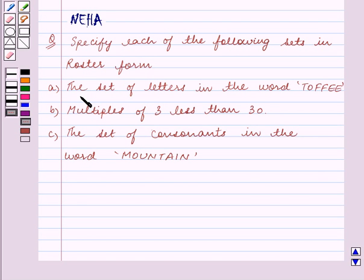Specify each of the following sets in roster form. Part A: The set of letters in the word TOFFEE. Part B: Multiples of 3 less than 30. Part C: The set of consonants in the word MOUNTAIN.